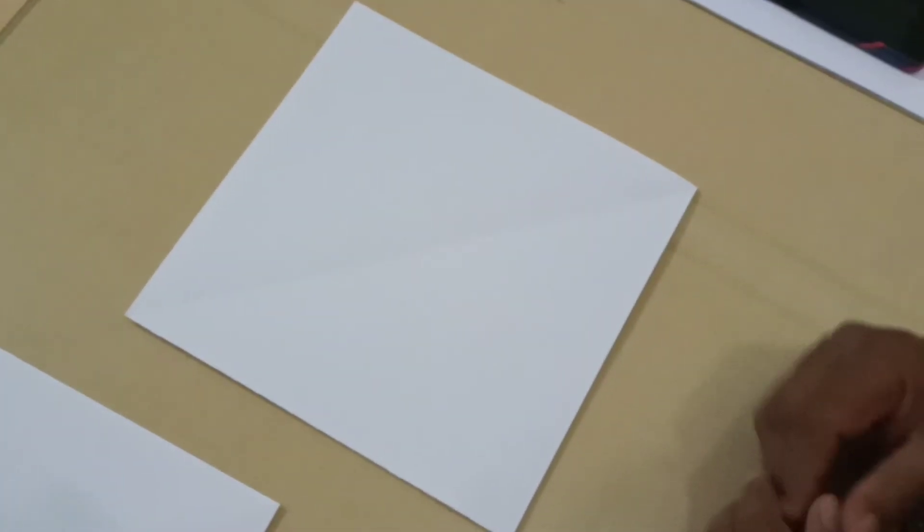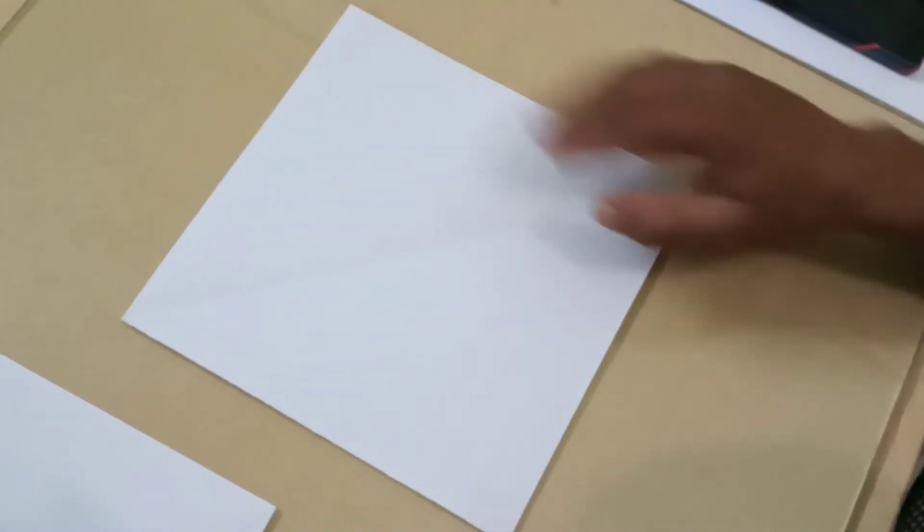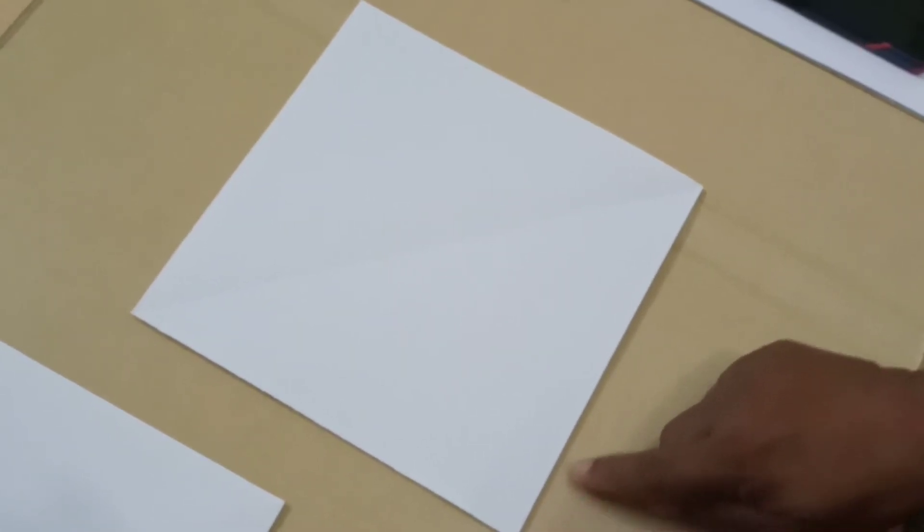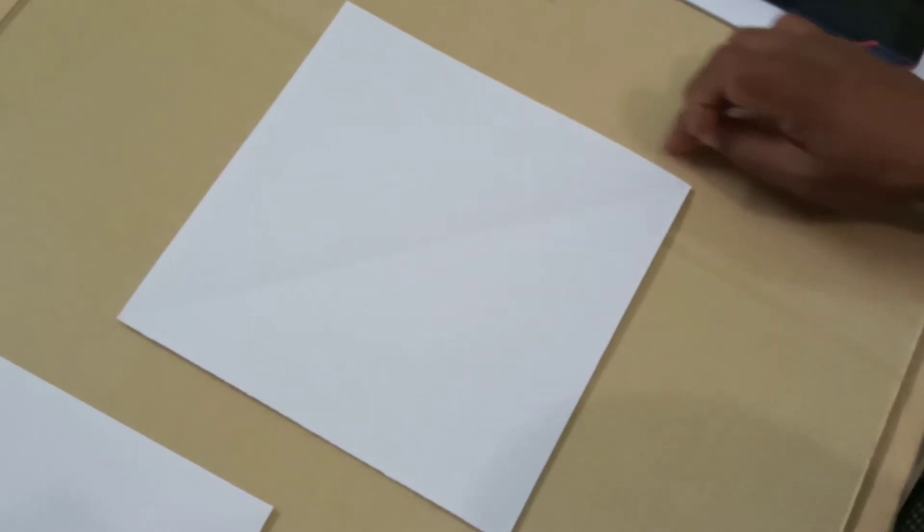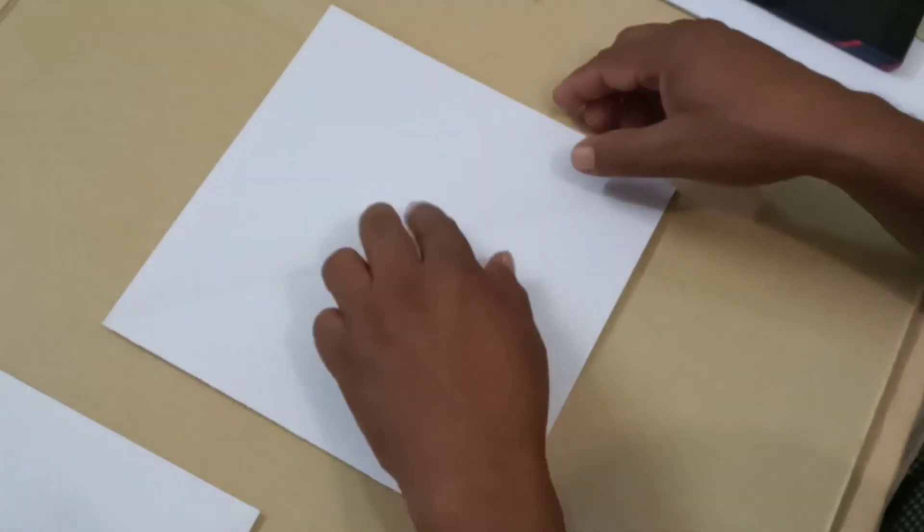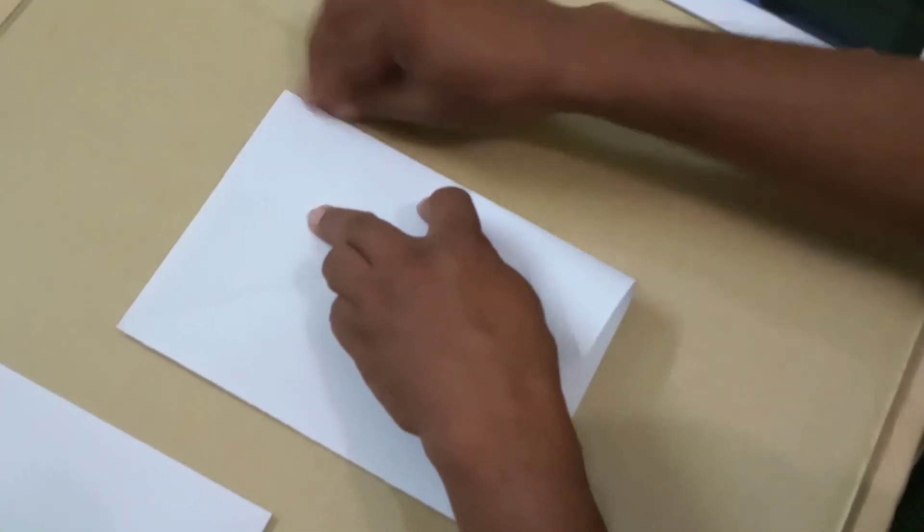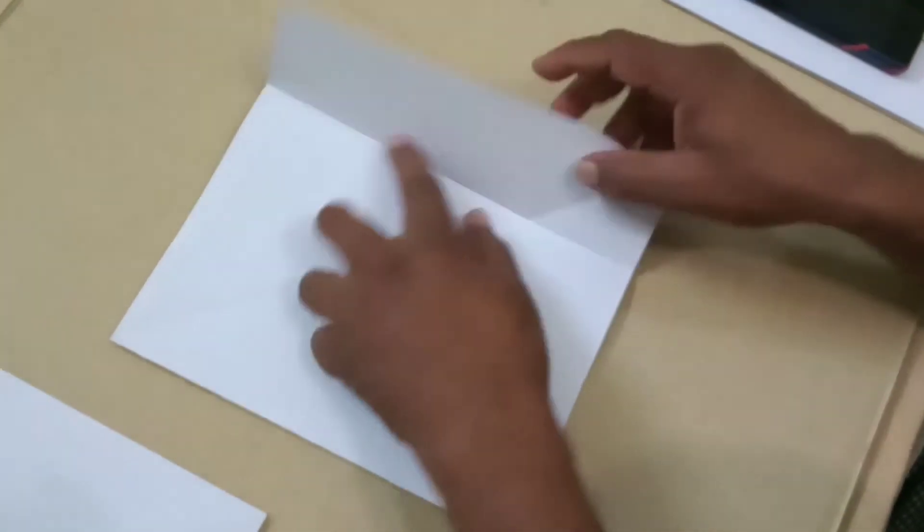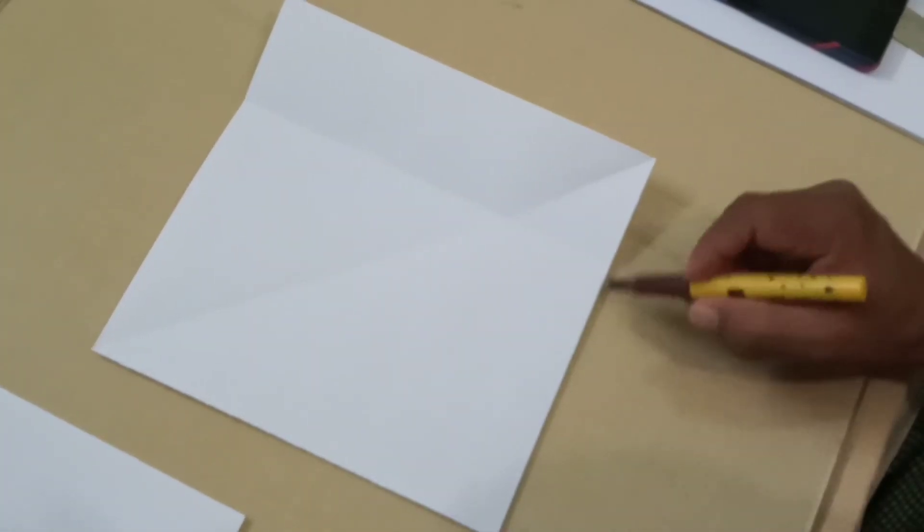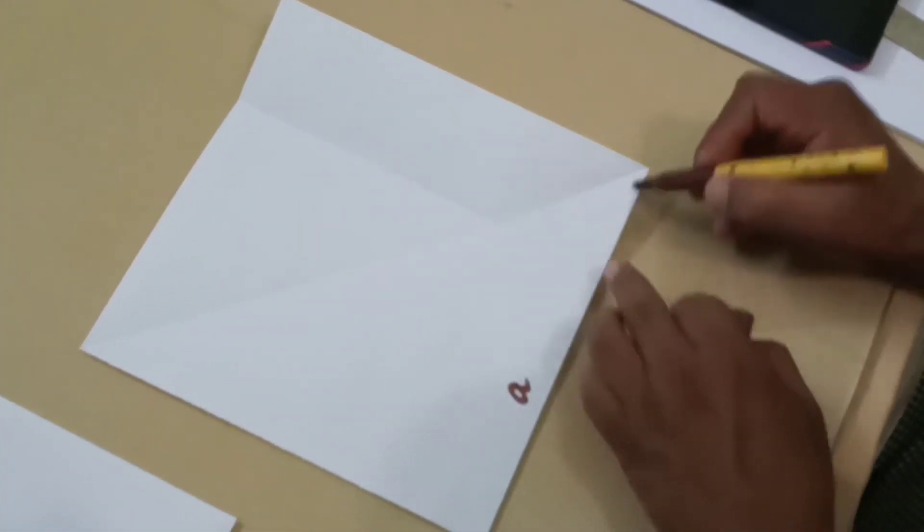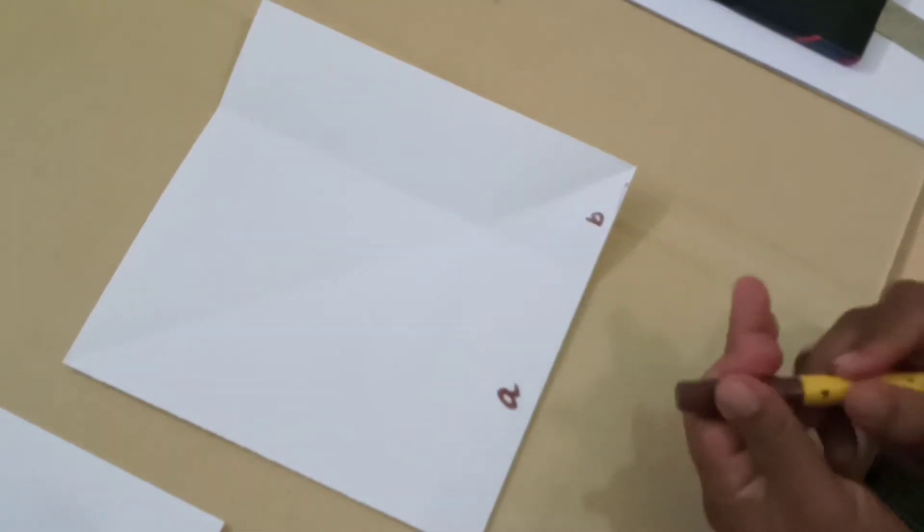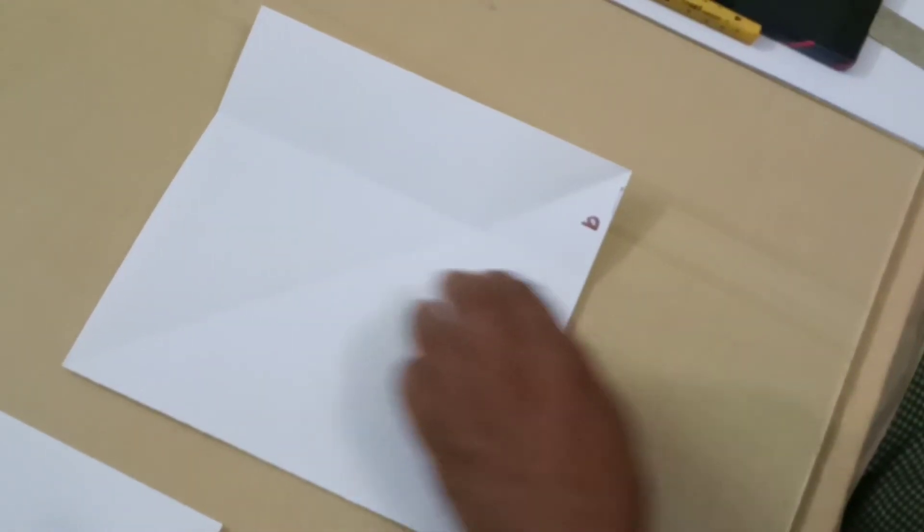Now we are trying to understand a plus b whole squared. So let us imagine that this side is a plus b and this side is a plus b. So I will divide this side into a plus b and this side into a plus b. So for that what I will do is I will fold this paper over here like this. So now this side from here to here it is a and from here to here it is b. If you are not able to see this line I will draw it for you with a pencil.